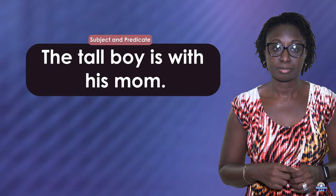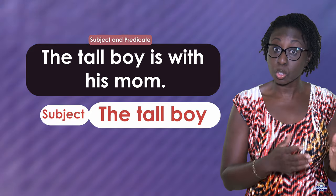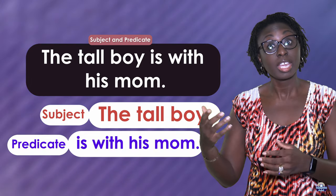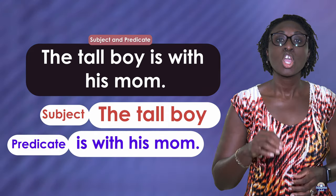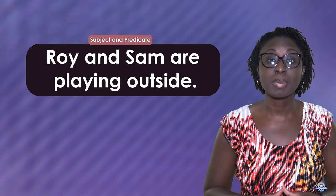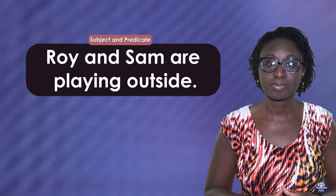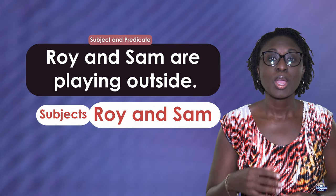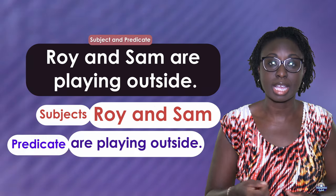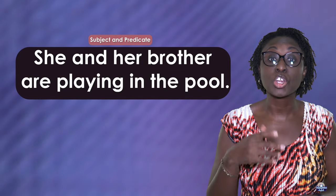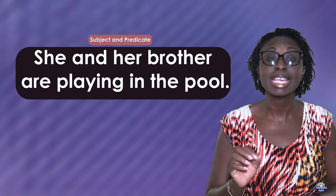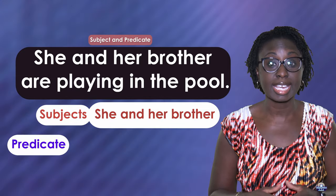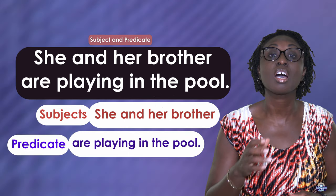'The tall boy is with his mom.' The subject is 'the tall boy' and the predicate is 'is with his mom.' 'Roy and Sam are playing outside.' Subjects: Roy and Sam. Predicate: are playing outside. 'She and her brother are playing in the pool.' Subjects: she and her brother. Predicate: are playing in the pool.